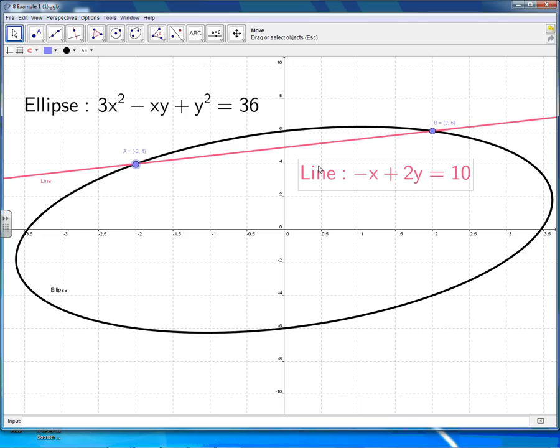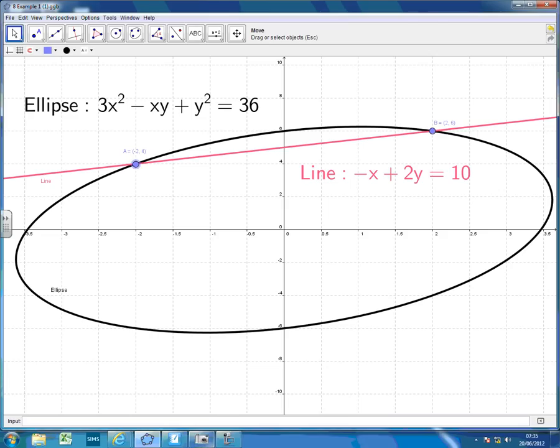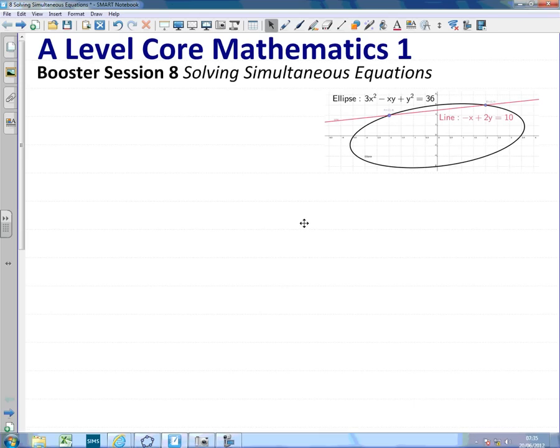And when we say we're going to solve equations simultaneously, what we really mean is that we're going to try and find these coordinates that actually fit both, that satisfy both equations. We basically take advantage of the fact that we know that the coordinates are on both the line and the curve. So, let me go to my smartboard file here. We're solving these simultaneously.